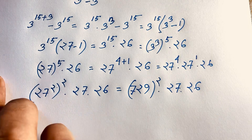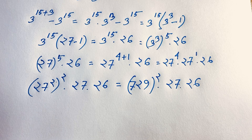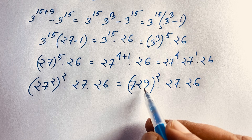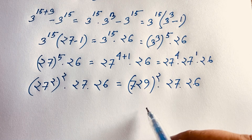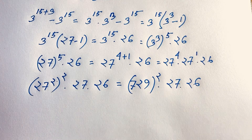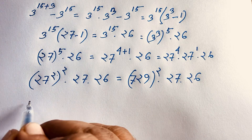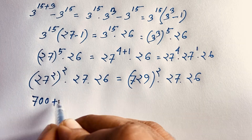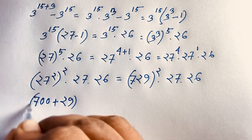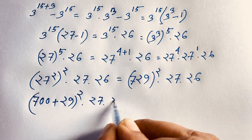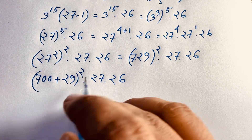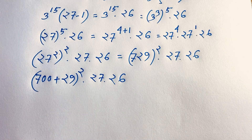So we have 729 whole to the power 2, times 27 times 26. To compute 729 squared, I write 729 as 700 plus 29, and apply the identity (a plus b) squared equals a squared plus 2ab plus b squared.